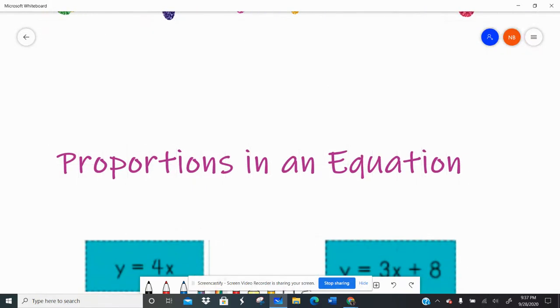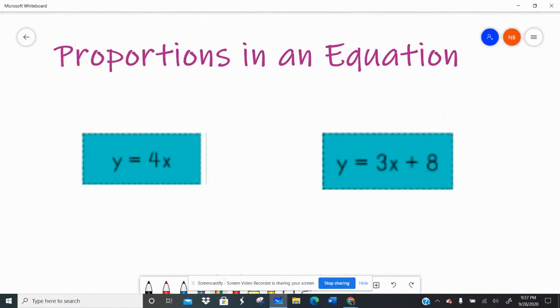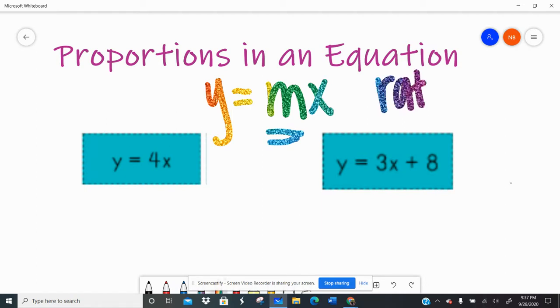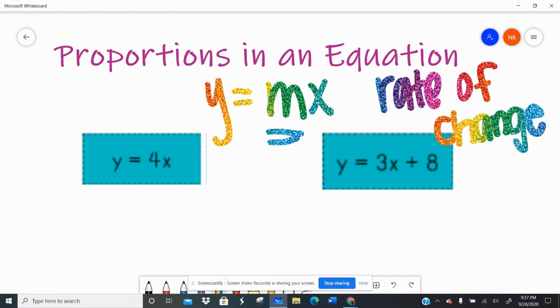And the last one let's look at is when we're looking at proportions in an equation. So the formula for proportion or proportional relationship is y equals mx. m is what we call the rate of change. It's also known as slope, but more to come on that next week when we actually graph some relationships.